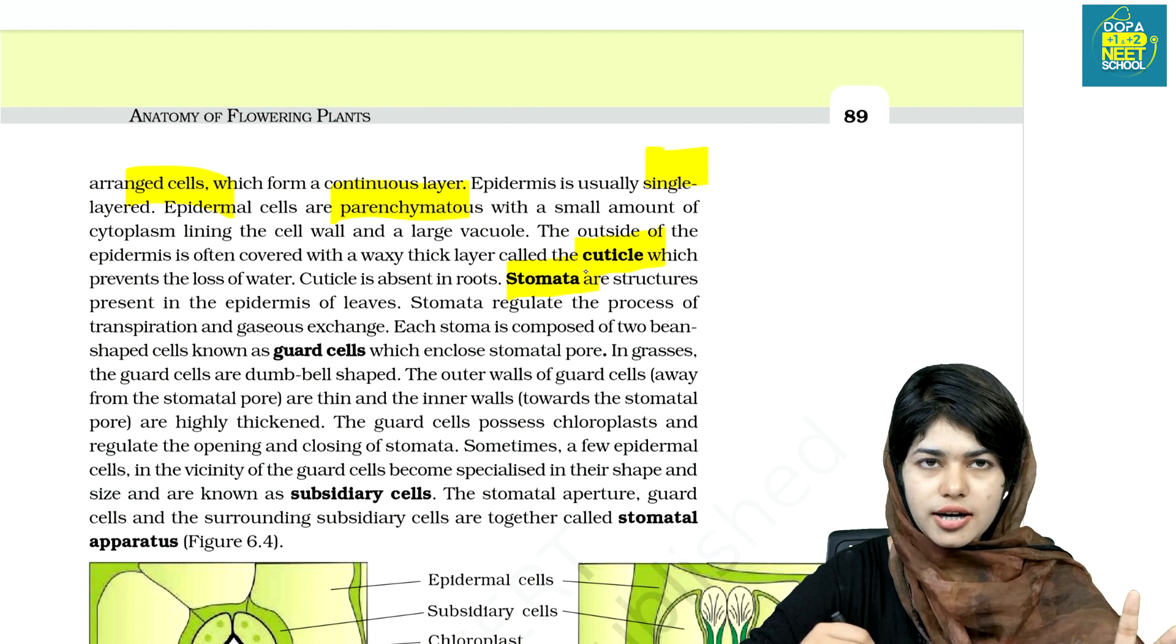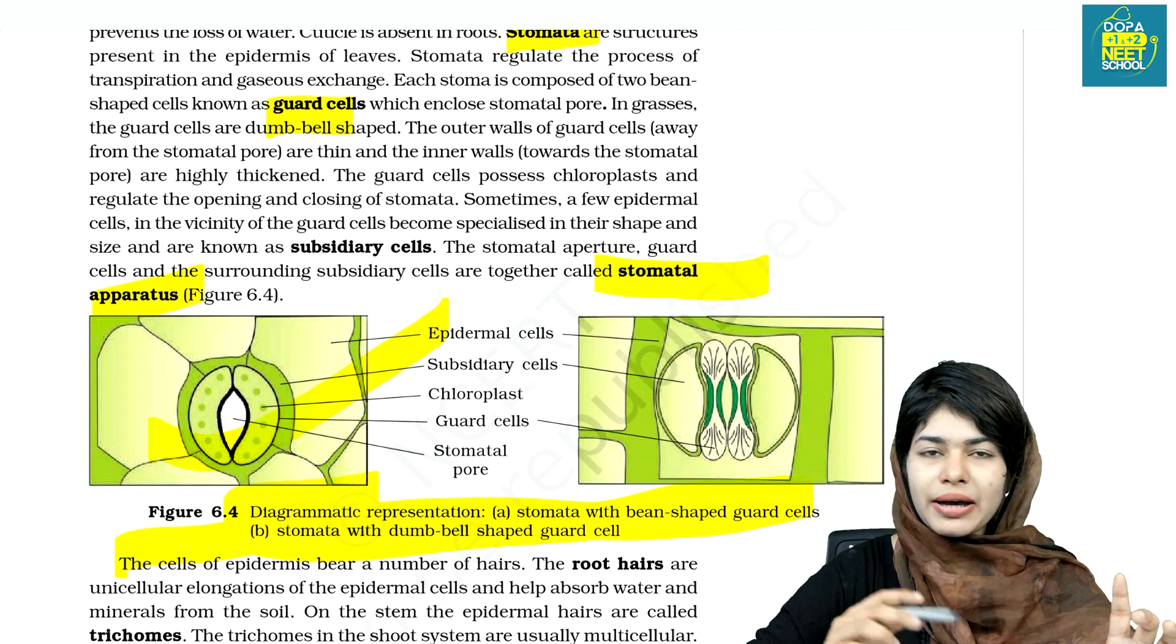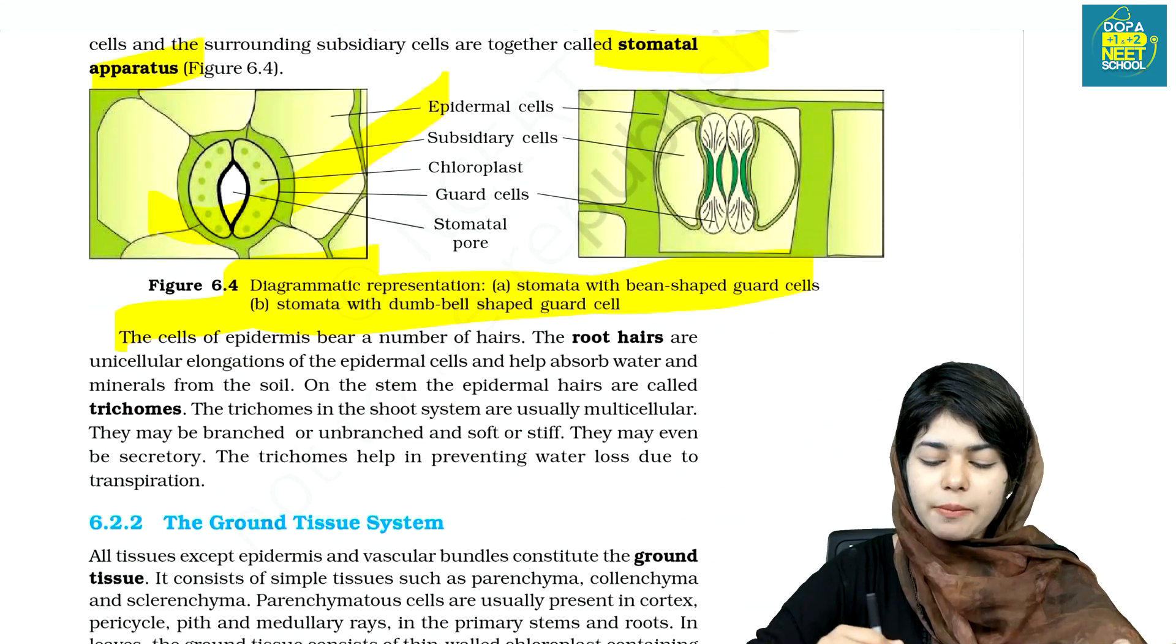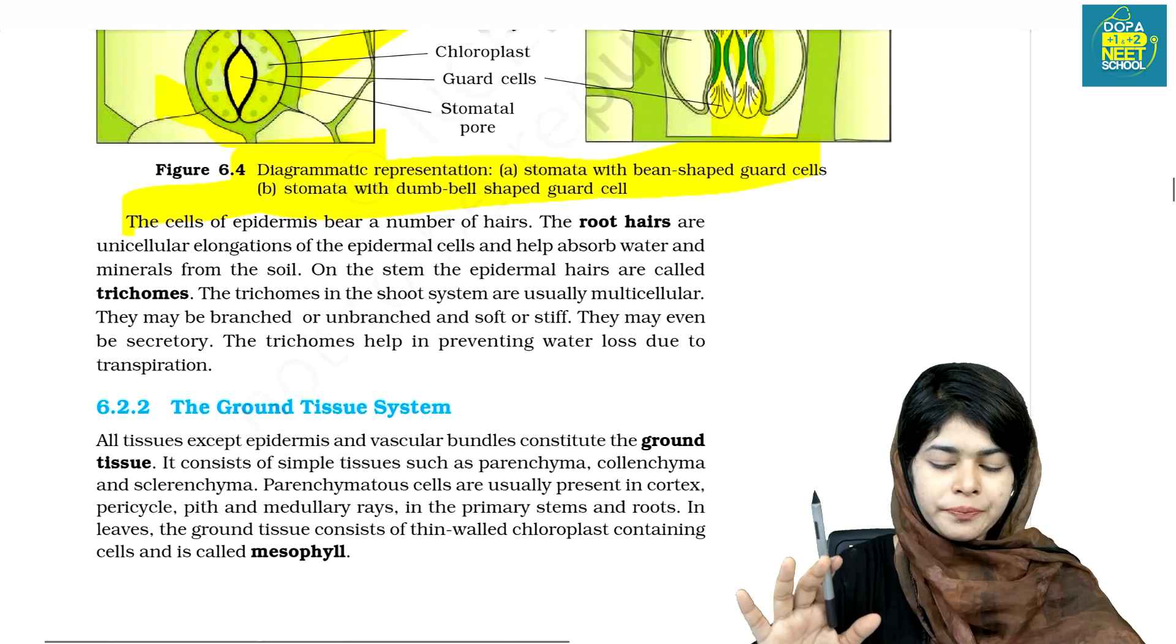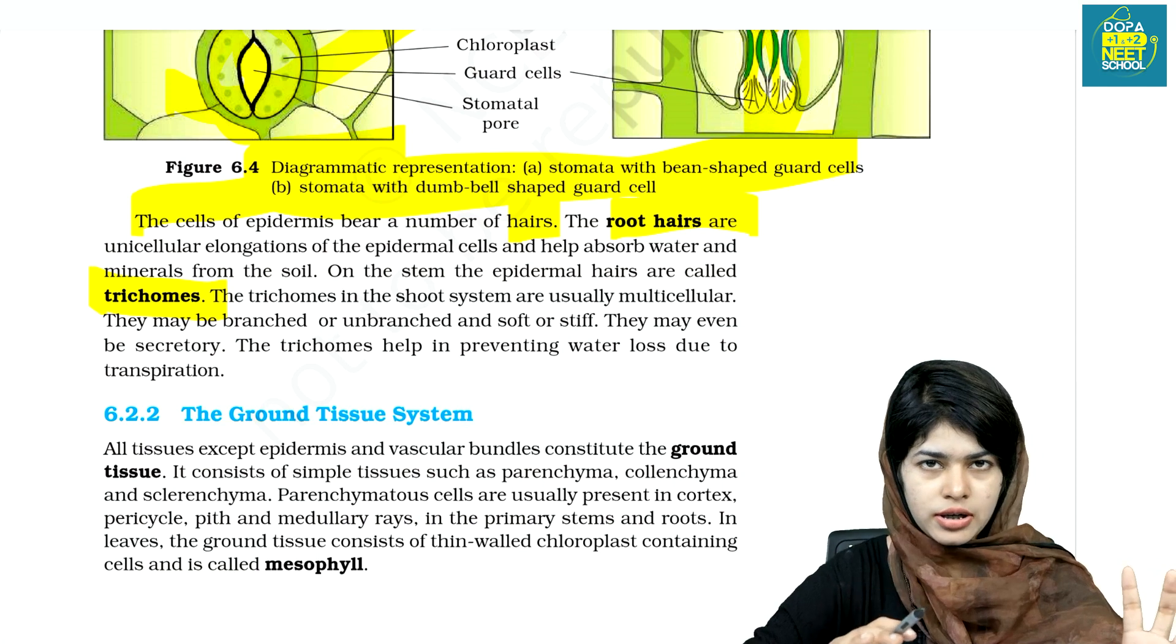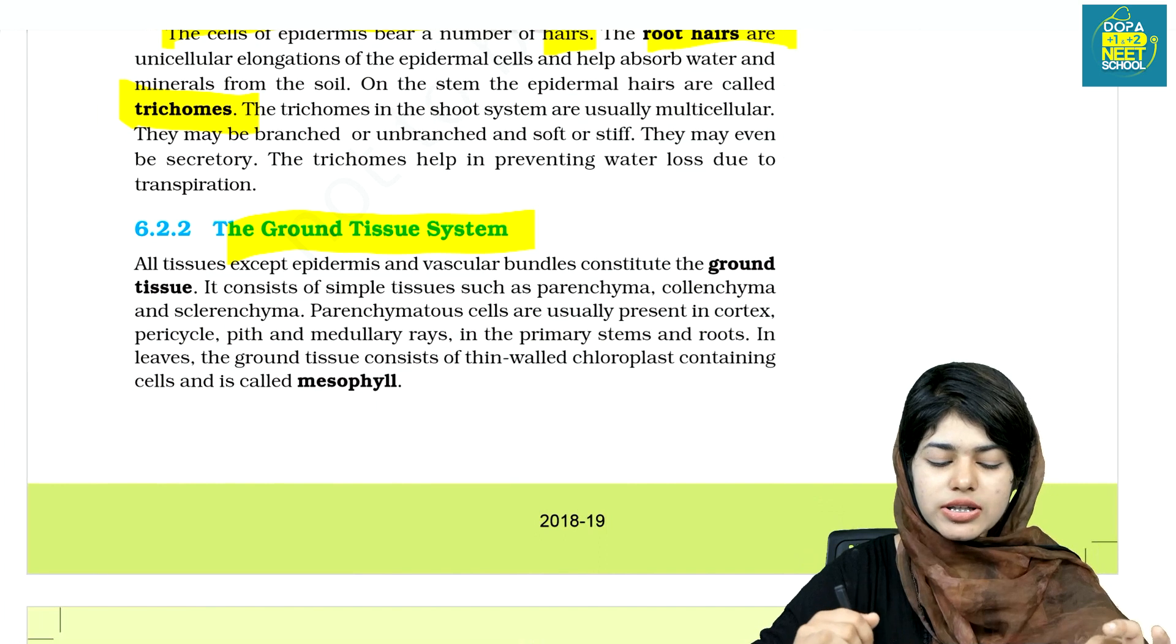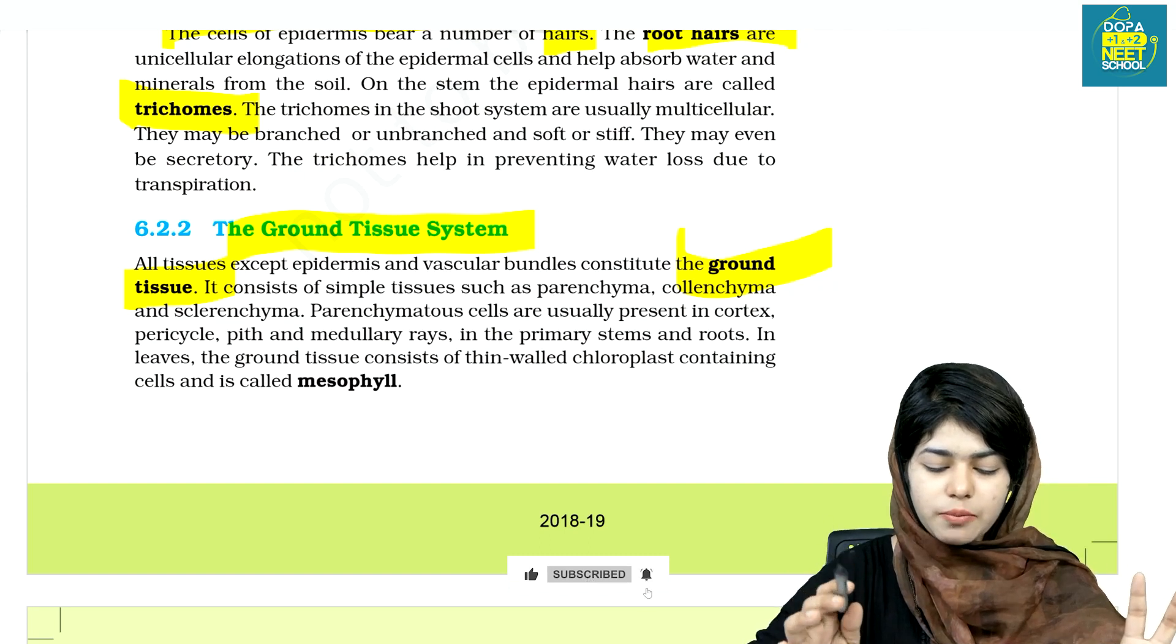It is called a Stomata. It is very important to watch the Stomata. Then there are Dumbbell-shaped and Kidney-shaped. The Pinnamine said that it is called trichomes. It is called trichomes. Second, we will use ground tissue system.